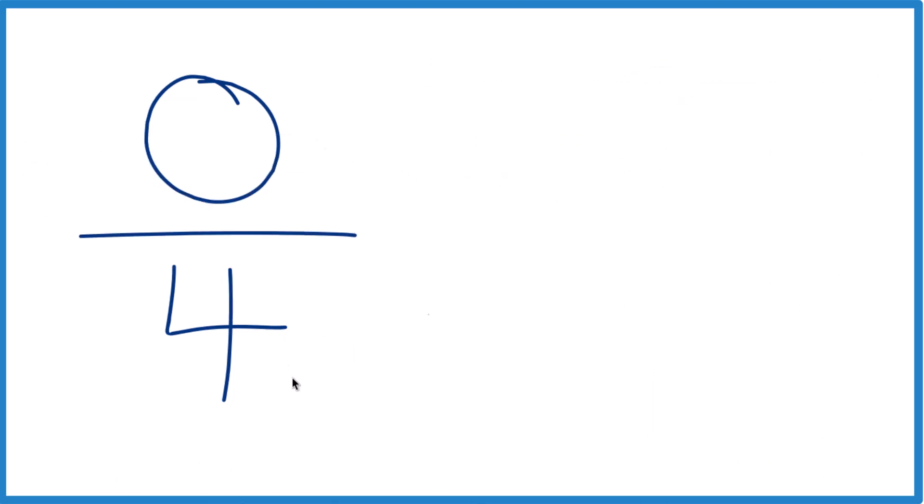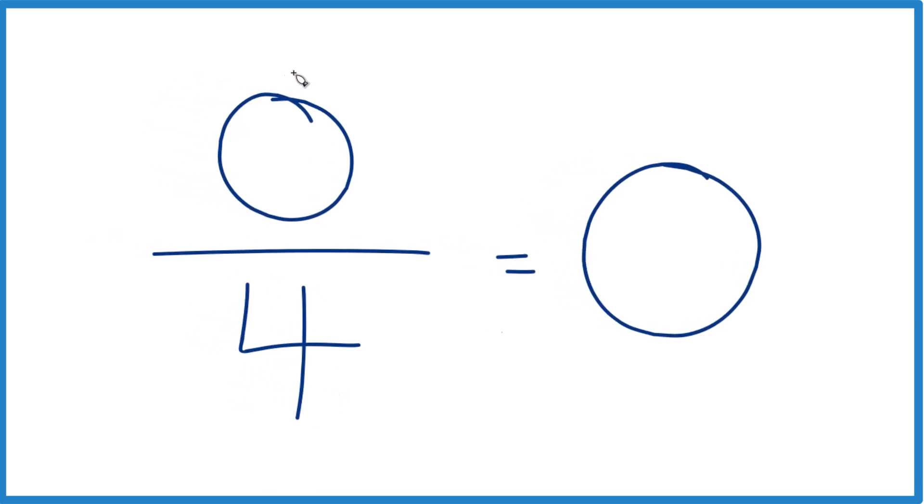So 0 things divided into 4 pieces, that's still going to equal 0. In fact, 0 divided by any number except 0 divided by 0, that equals 0.